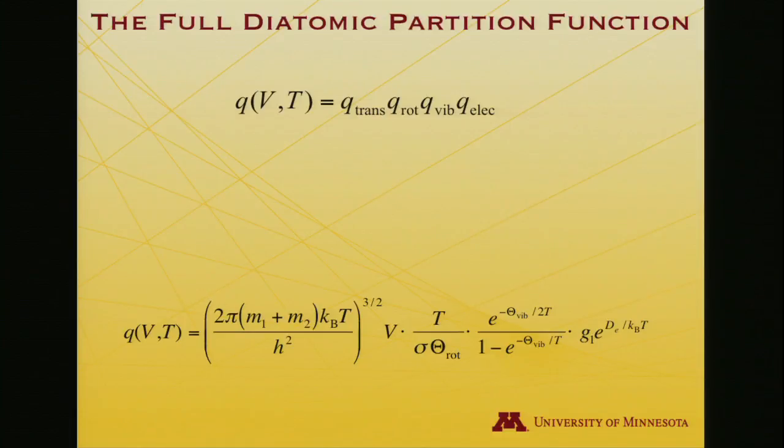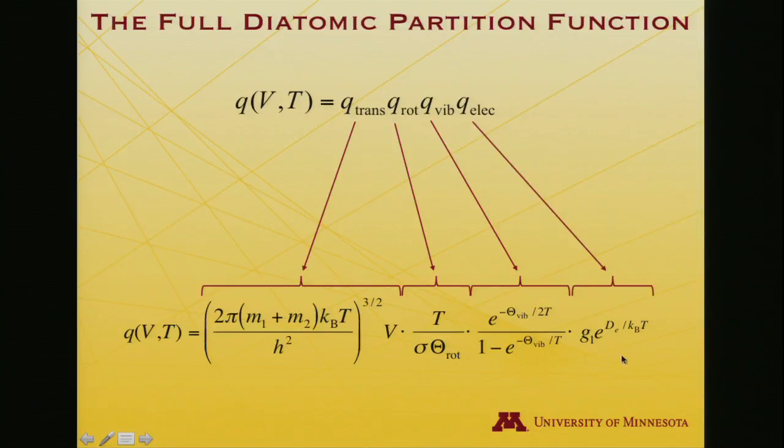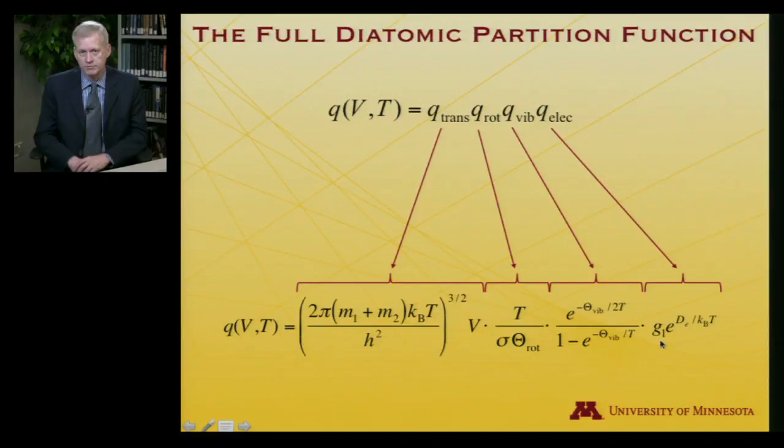So, the full diatomic partition function in that case, which, remember, is the product of all the individual partition functions. When you have an energy that's a sum of energies, the corresponding partition function is a product of partition functions. I've just expanded it down below. It depends on volume, and it depends on temperature. The volume dependence comes in in the translational term. Remember, that's from particle-in-a-box quantum mechanics. Then there's the rotational term we looked at most recently, now with the symmetry number appearing. The vibrational term, which we did before we did rotation, and it involves the vibrational temperature. And finally, our assumption that the electronic component involves only the ground state, and the ground state energy is defined relative to the dissociation energy of the diatomic, and it gives rise to this partition function where the degeneracy of the ground state is included as well.